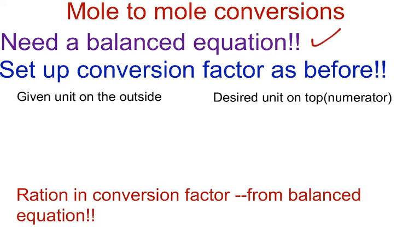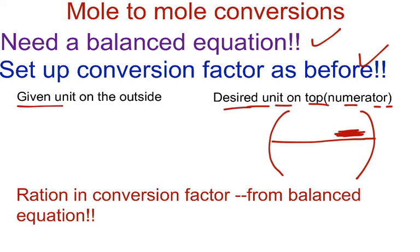As I said before, we need a balanced equation to do mole-to-mole conversions. We will set up our conversion factors as before. So we know we have our parentheses. We know we have our lines separating our numerator and our denominator. As we always do, the desired units, whatever units you're looking for, goes in the numerator, goes on top. And whatever they give you, the given units, you put that on the outside.